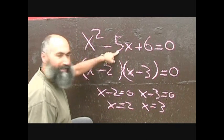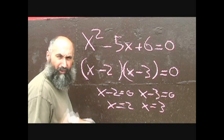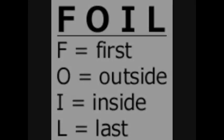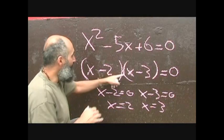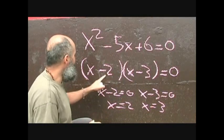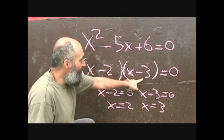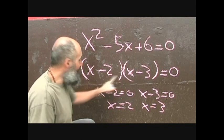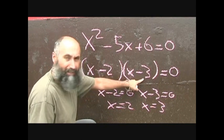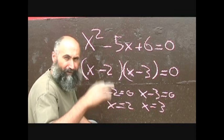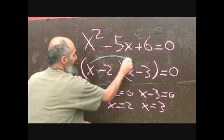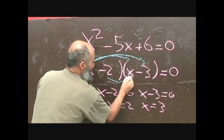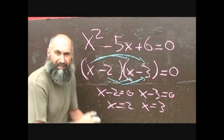If you want to go from the factored form back to the expanded form, all you do is something called FOIL. I don't use the term very much — it stands for the First two numbers multiplied together, the Outside numbers, the Inside numbers, and the Last numbers. What I do is just do it visually: this multiplies this, this multiplies this, this multiplies this, this multiplies this.